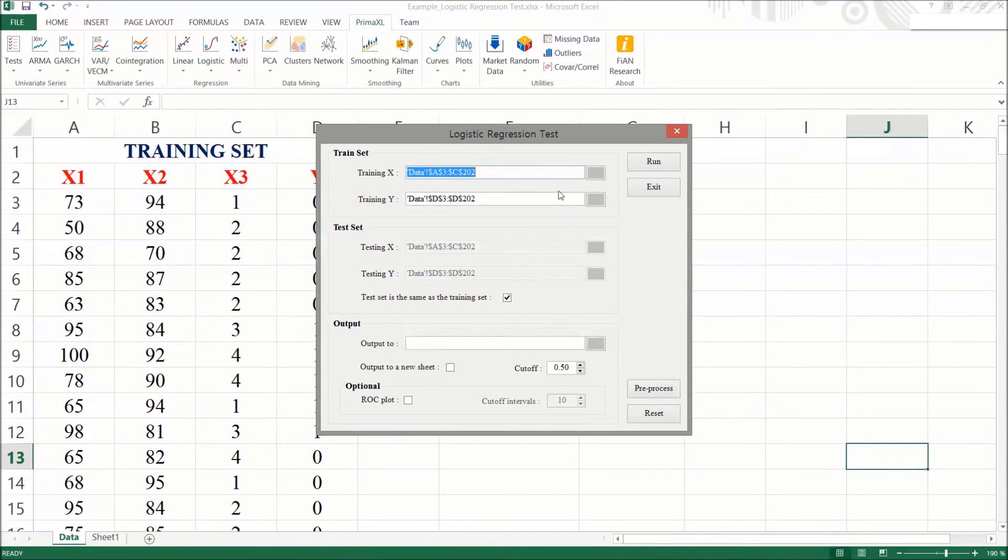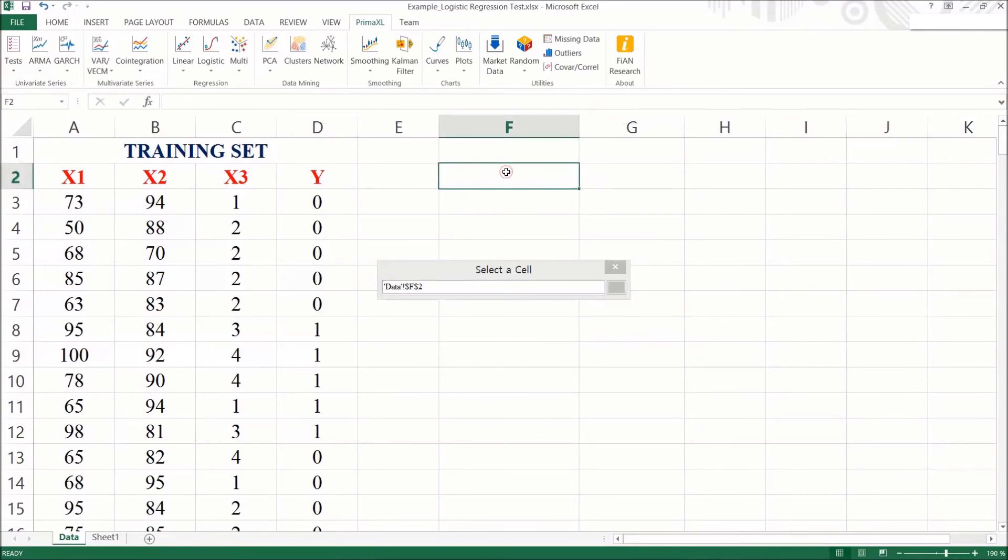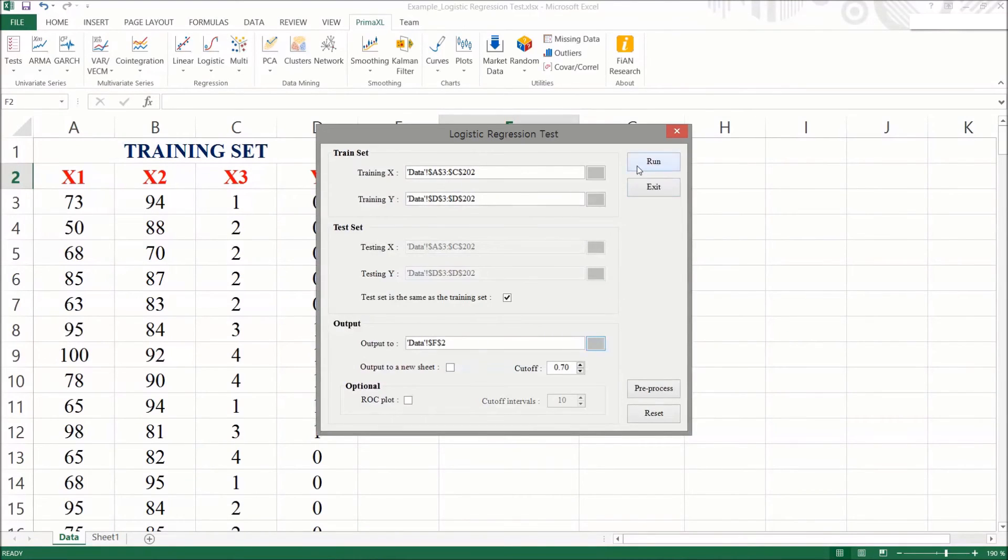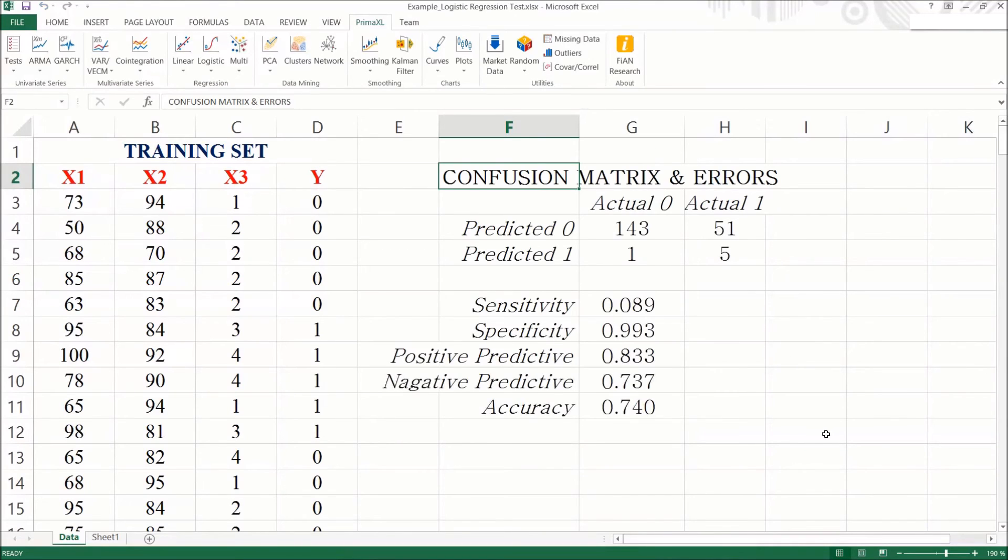Okay, let's reset the cutoff to 0.7 and rerun. Compared to what we had, the sensitivity decreases while the specificity increases and the accuracy remains more or less the same.